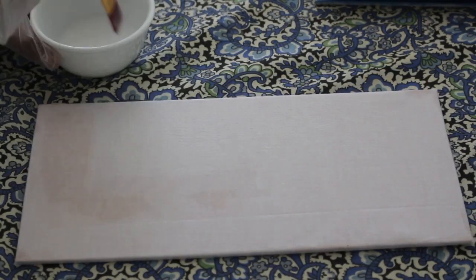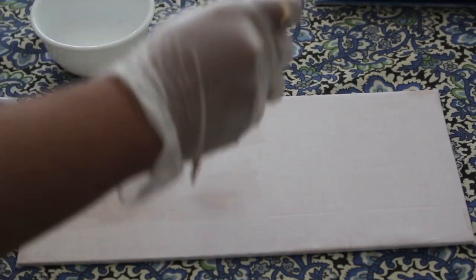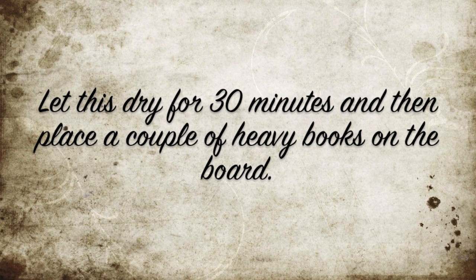Once you're done with the back side, now turn it over and start applying the glue gently all over. Keep pressing so that you can take off the bubbles and let this dry for about 30 minutes.